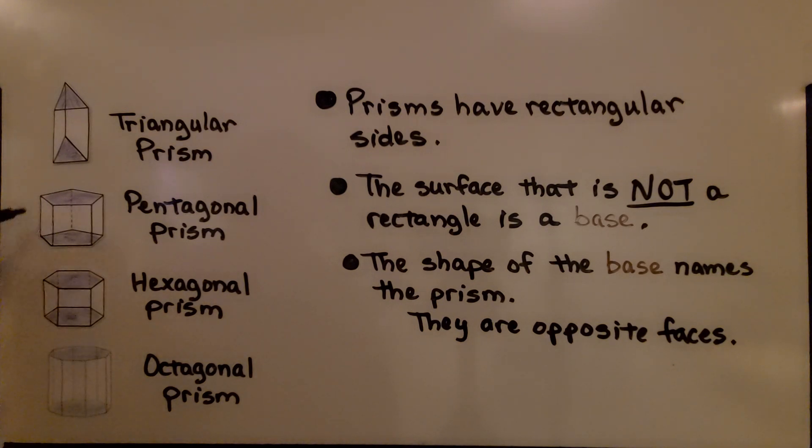This has a pentagon on the top and bottom as its bases, that's a pentagonal prism. Hexagon for a base, hexagonal prism. And we have an octagonal prism, an octagon for a base. They're opposite faces.